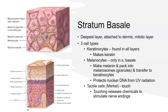The stratum basale has large keratinocyte stem cells that are constantly undergoing mitosis and generating new keratinocytes to replace those being pushed further up. Cells closest to the surface are dead, so these stem cells continuously replace them. The name keratinocytes is derived from the protein they produce called keratin, which strengthens the epidermis — it is a very fibrous structural protein that is tough and insoluble.